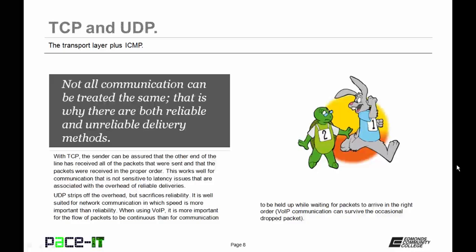Not all communication can be treated the same, which is why there are both reliable and unreliable delivery methods. With TCP, the sender can be assured that the other end has received all of the packets that were sent, and that the packets were received in the proper order. This works well for communication that is not sensitive to latency issues associated with the overhead of reliable deliveries. UDP strips off the overhead but sacrifices reliability. It is well suited for network communication in which speed is more important than reliability. For example, when using Voice over IP, it is more important for the flow of packets to be continuous than for communication to be held up waiting for packets to arrive in the right order. Voice over IP can survive the occasional dropped packet, but gets very problematic when it has to wait for those packets to arrive.